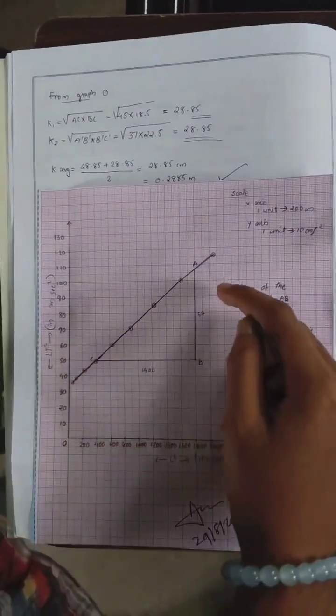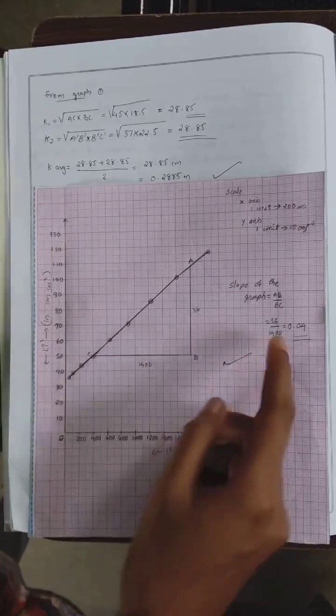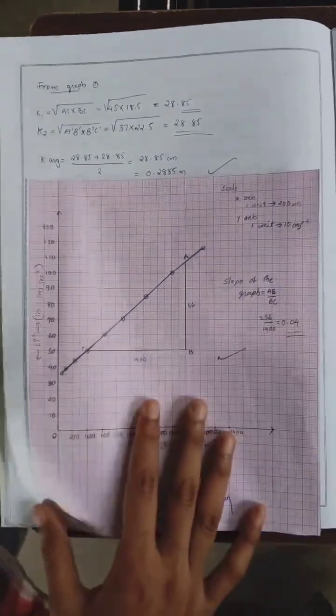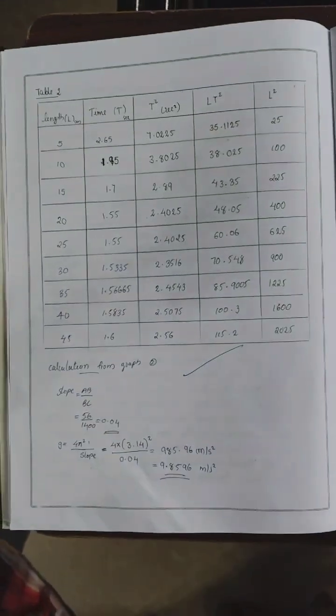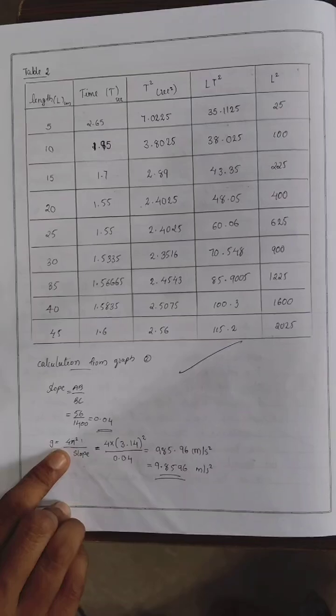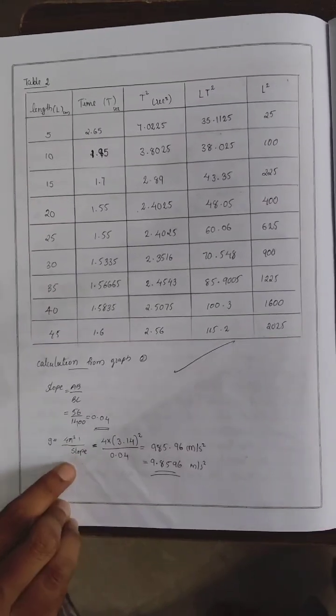And from this, we calculate the slope of the graph. This is the value we get. And to find the acceleration due to gravity, there is an equation: 4π squared into 1 by slope. And this is the value we get.